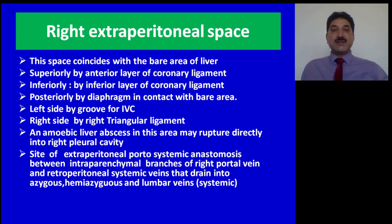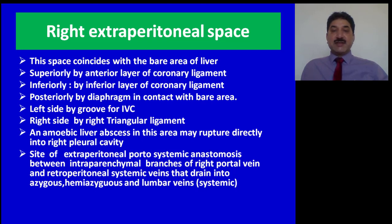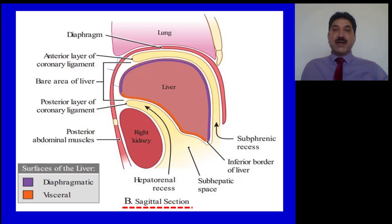The right extraperitoneal space coincides with the bare area of the liver. Superiorly it is bounded by the anterior layer of the coronary ligament, inferiorly by the inferior layer of the coronary ligament, posteriorly by the diaphragm in contact with the bare area, on the left side by the groove for the inferior vena cava, and on the right side by the right triangular ligament. Clinically, an amoebic liver abscess in this area may rupture directly into the right pleural cavity. The bare area is also the site of extraperitoneal portosystemic anastomosis between intraparenchymal branches of the right portal vein and retroperitoneal systemic veins draining into the azygous, semi-azygous, and lumbar veins.